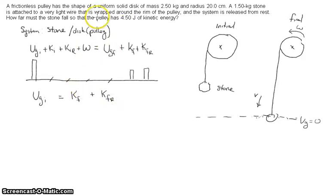In the problem, how far does the stone fall so that the pulley has 4.5 joules of kinetic energy? We know that the pulley will then have rotational kinetic energy of 4.5 joules. So we add this to our one-half mv squared, and this will equal mgy.